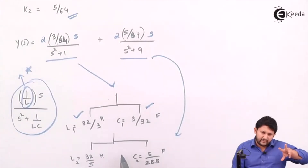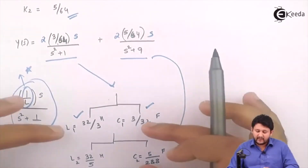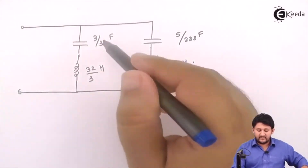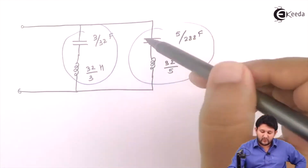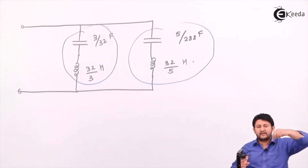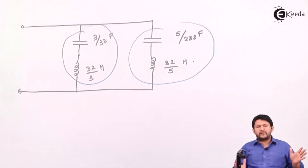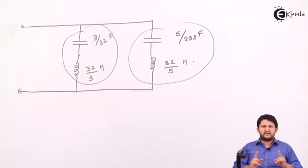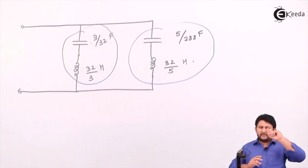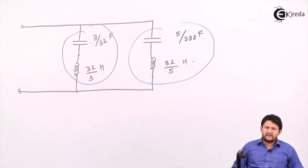In Foster 2, L1C1 is arranged in series and L2C2 is arranged in series, but both of these combinations are arranged in parallel. Sub-equation 1 and sub-equation 2 are arranged in parallel. To summarize: in Foster 1, sub-equations are arranged in series and the combination is arranged in parallel. In Foster 2, sub-equations are arranged in parallel and the combination is arranged in series. Once you know Foster 1 well, Foster 2 is exactly the reverse.